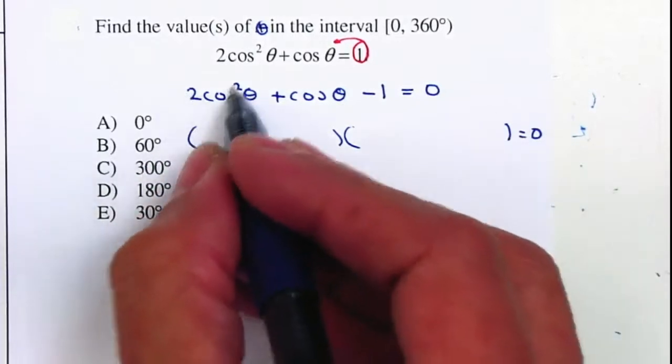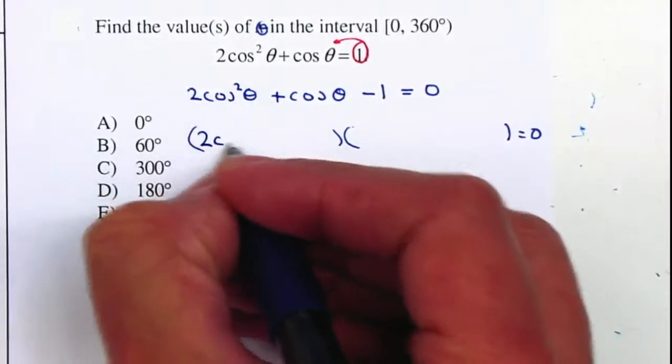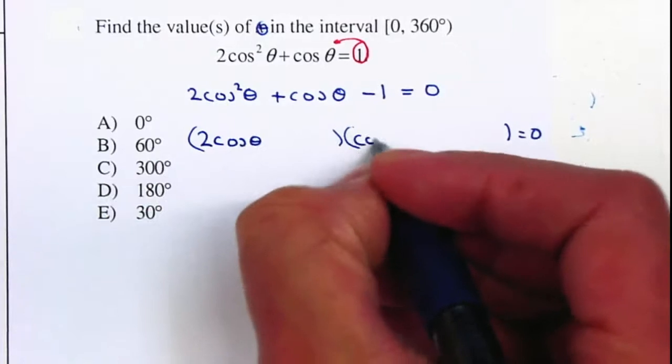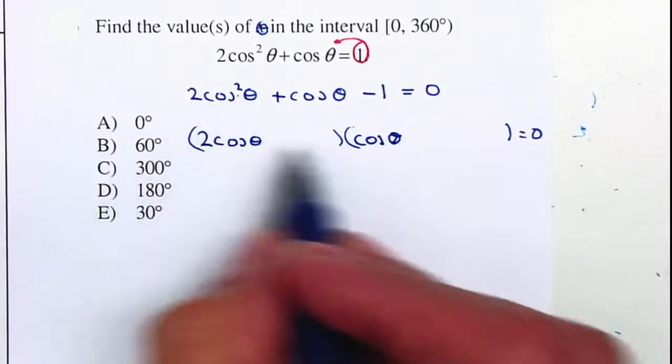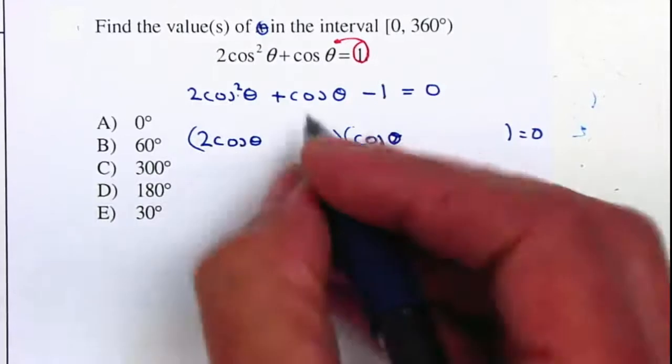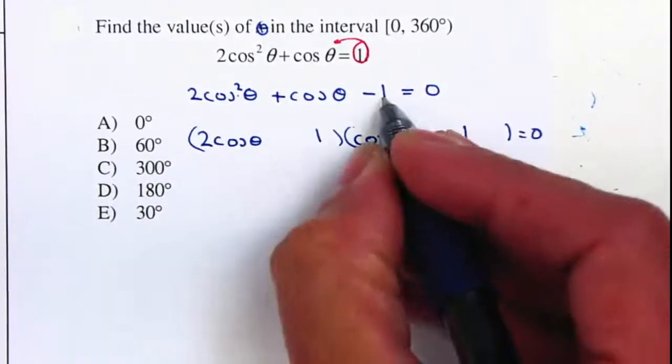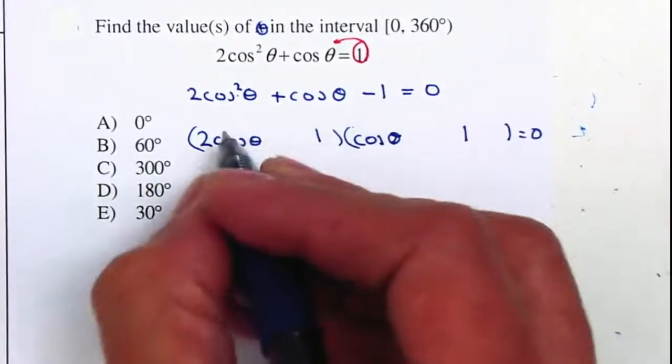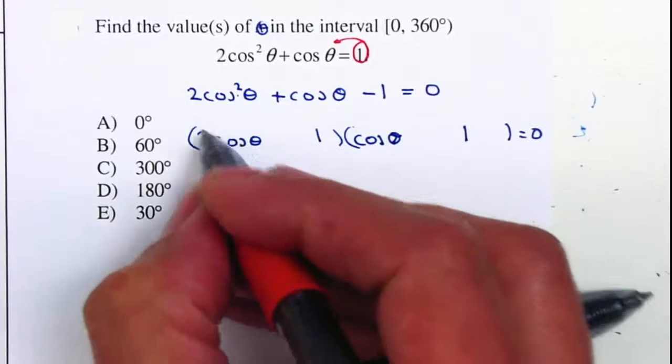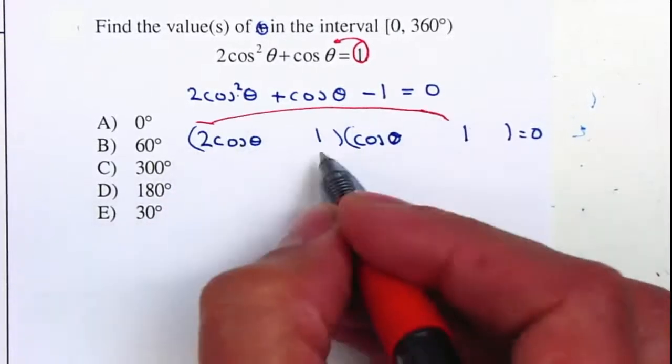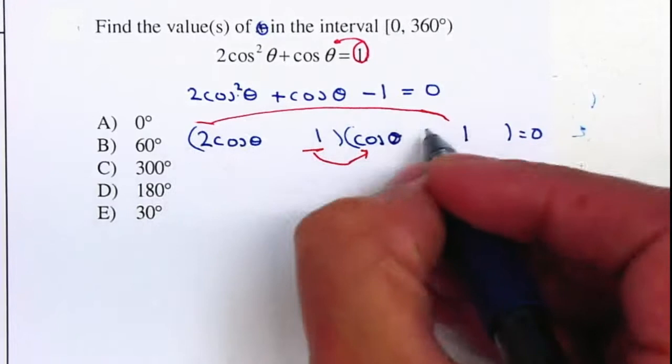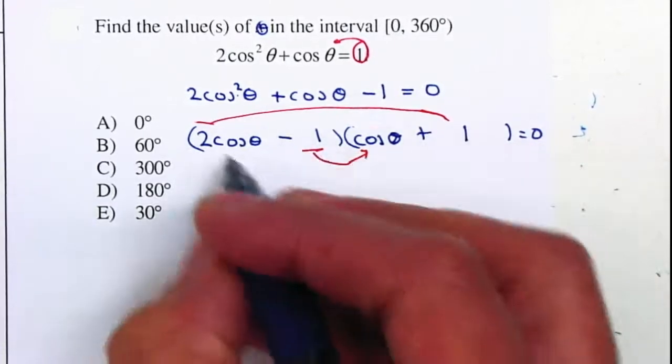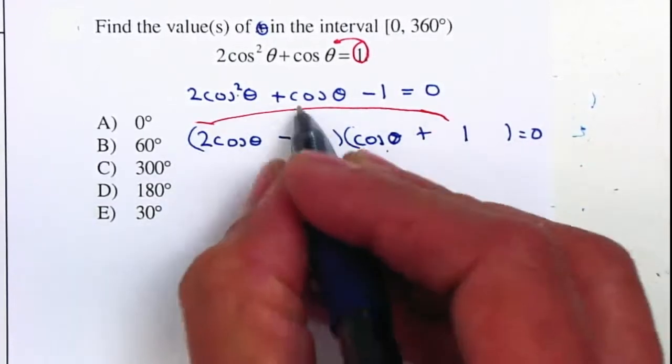Factors of 2 cosine squared will be 2 cosine theta and cosine theta. You can think of this as being 2x squared. It will be 2x and an x. Factors of 1 will be 1 and 1. That's a negative 1, so 1 negative 1 positive. Remember that you are going to be multiplying, that gives me 2 and that gives me 1. So therefore I'm going to make my 2 a positive and that's a negative and that gives me positive 2 minus 1 gives me positive 1.